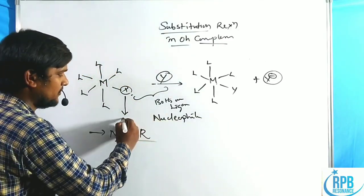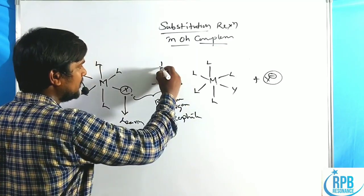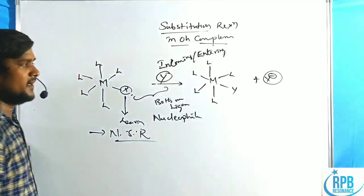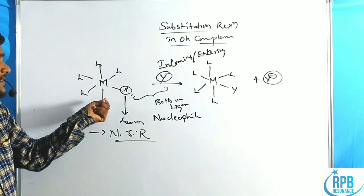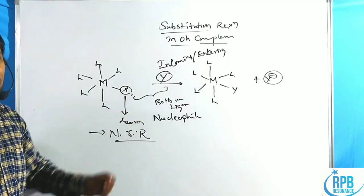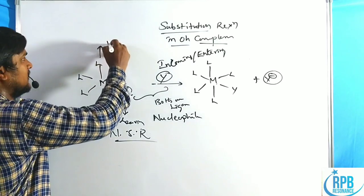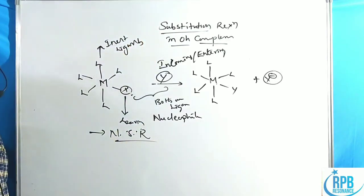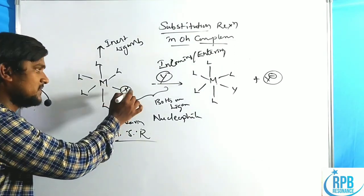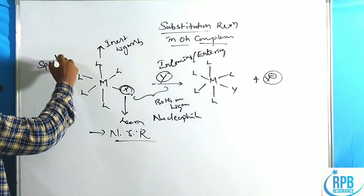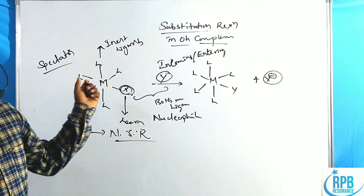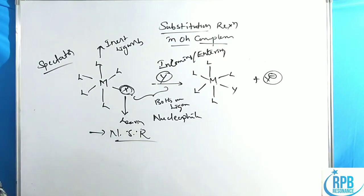The leaving group is the one being replaced; the incoming one is called the entering group or incoming nucleophile. The remaining five unaffected ligands are called inert ligands. The opposite ligand which provokes the elimination of the X group is called the spectator ligand. We will discuss spectator ligands later when covering the trans effect, inner sphere, and outer sphere mechanisms.